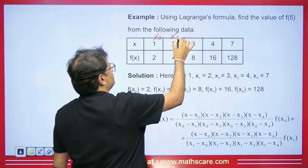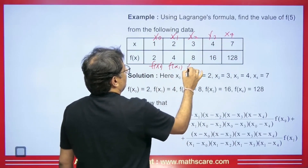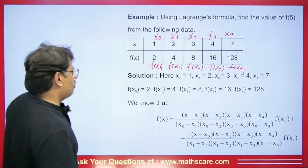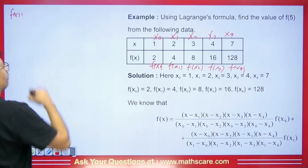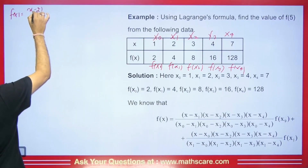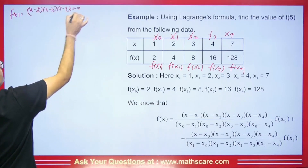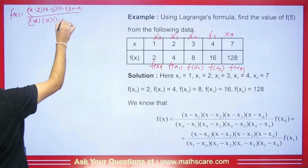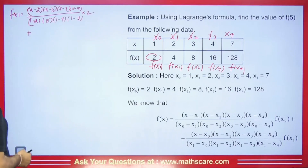Whenever we have a question, say we have x0, x1, x2, x3, x4 with corresponding values fx0, fx1, fx2, fx3, fx4, and we are asked the value of f(5). We write f(x) equals — what you have to do is hide x0=1. So we get (x−2)(x−3)(x−4)(x−7) divided by (1−2)(1−3)(1−4)(1−7) multiplied by its corresponding value.